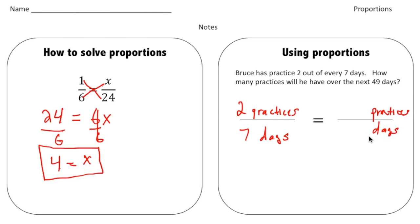Now the last part we do is we plug in the other information that we know. So the question says how many practices will he have over the next 49 days? So we're trying to figure out how many practices there are going to be. So that's going to be the unknown. So we're going to use n for the unknown, or I could use x or any other letter. And then it's 49 days, so the 49 goes next to the days.